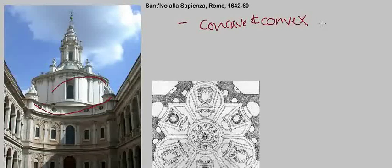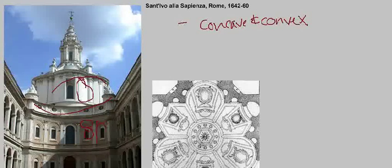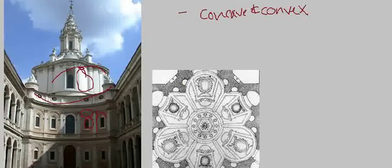He also creates liveliness in the facade not only with the contrast of concave and convex, but by contrasting straight elements like columns with arches, and contrasting lighter shades of materials — the white of the drum of the dome — with the darker color of the stone and even the shadow created by the windows. Lots of contrasting elements playing against one another create interest, liveliness, and movement. But it's really in the plan of this church that we get to what's so interesting about this building.